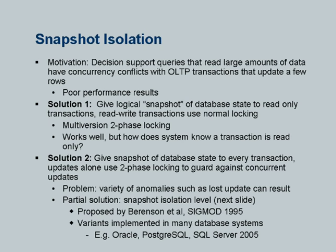The transaction, whether it is going to read or write, gets a logical snapshot and reads everything from its snapshot. Now, can there be a concurrency control problem when these guys write? Yes, of course there can be. So if you do the following: transactions will read from their snapshot, when they want to write a data item, they will get an exclusive lock on it and do the write and then commit.